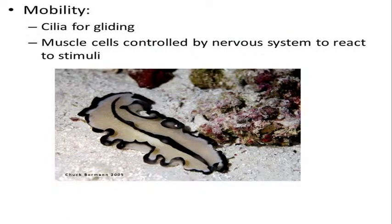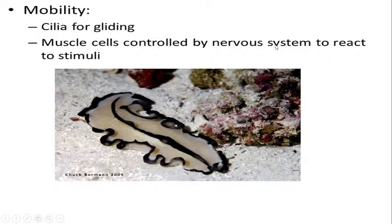Besides Schistosoma, there are many other types — liver flukes affect our liver and blood flukes affect our blood. Regarding mobility, cilia are present, as you can see the black-colored cilia used for gliding. Muscle cells controlled by the nervous system respond to stimuli, and cilia are under the control of the nervous system for locomotion.